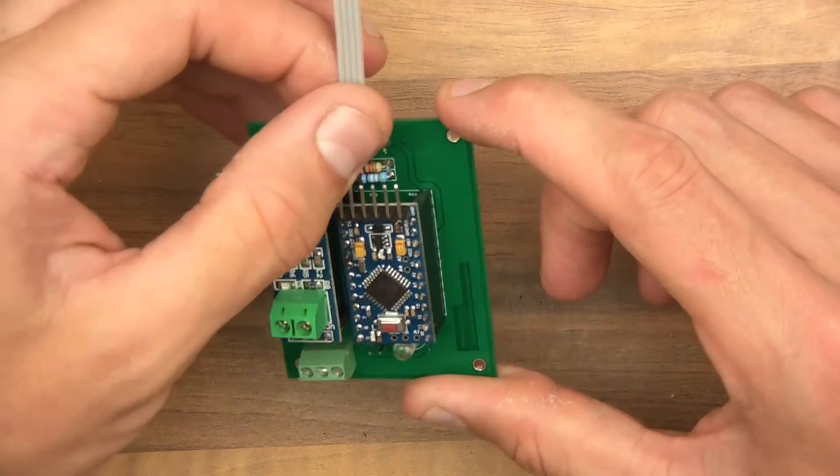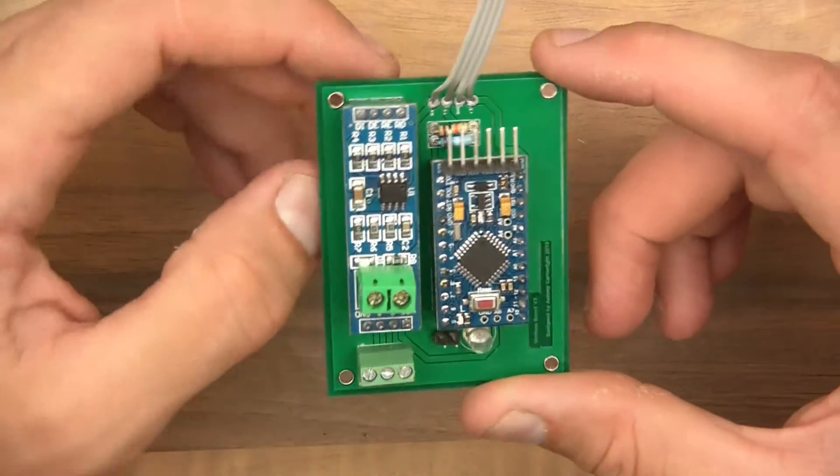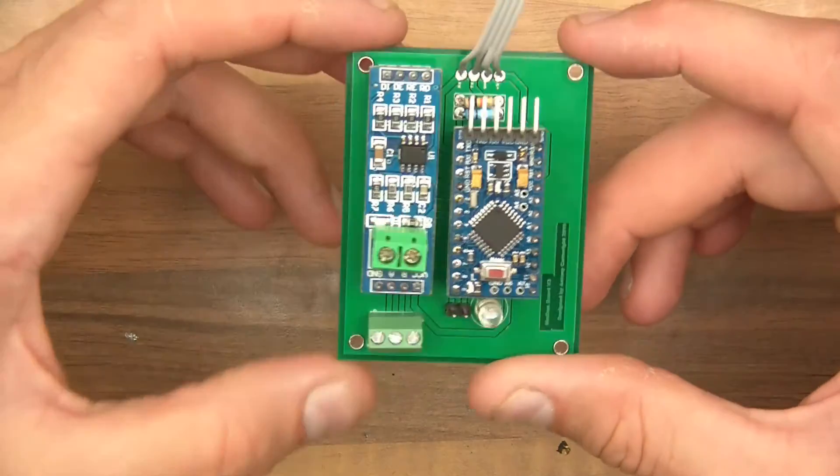And this little LED here, it blinks whenever it gets some data from this. So if it doesn't get any data it doesn't blink, and when it does get data it does blink, which should be, I think it's once a second or something like that. I can't really remember.